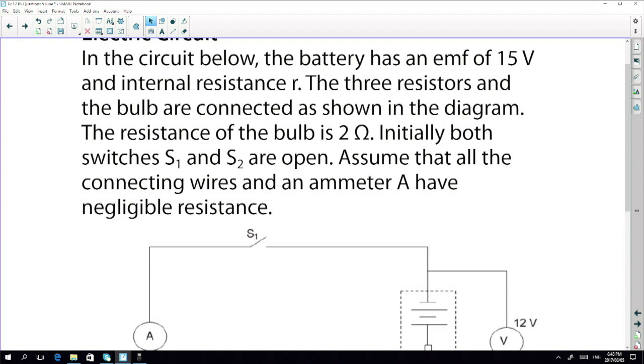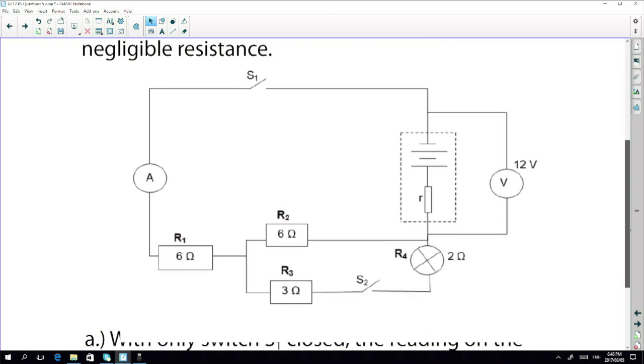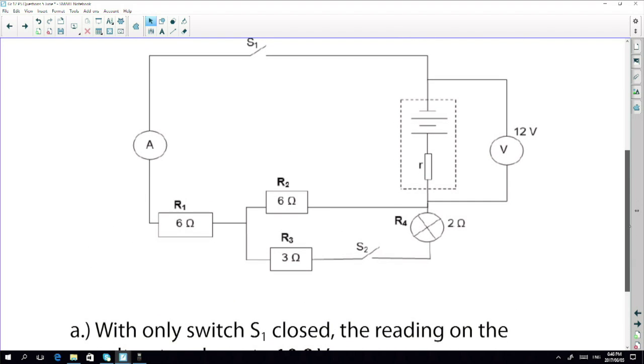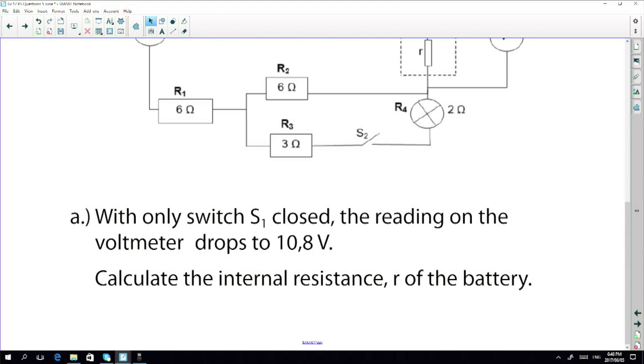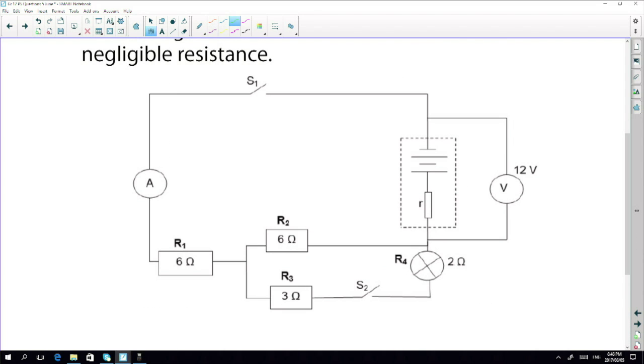The three resistors and the bulb are connected as shown in the diagram. The resistance of the bulb is 2 ohms. Initially, both switches are open. Assume that all the connecting wires and meter A have negligible resistance. So with only switch 1 closed, the reading on the volt meter drops to 10.8 volts. Calculate the internal resistance of the battery. So let's go with the fact that all the information is actually given on my diagram as it says. Switch S1 gets closed. Now if any of you have ever seen me do electricity, you know that what I like to do. If I do this, S gets closed. Now this is what happens. We get this. We have a series circuit. Two resistors in series. That's great. Nice and easy.